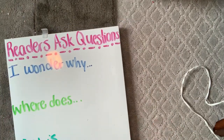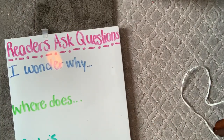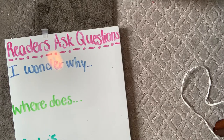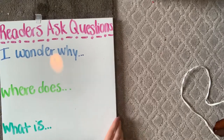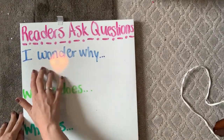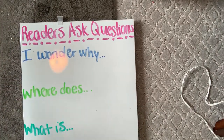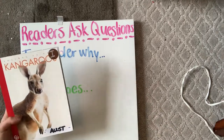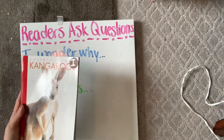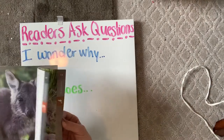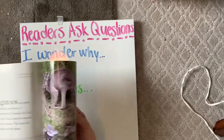I went ahead and set up our anchor chart and it's called Readers Ask Questions. There are three sentence starters that I went ahead and wrote out for us. We've already read this book — we read it in the first Monday lesson. So if you have not checked out that lesson yet, go ahead and go back and watch that lesson. We went ahead and learned all about kangaroos.